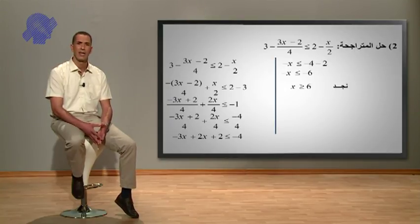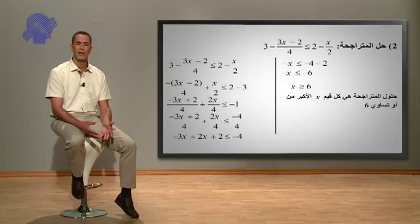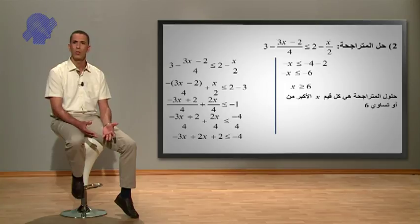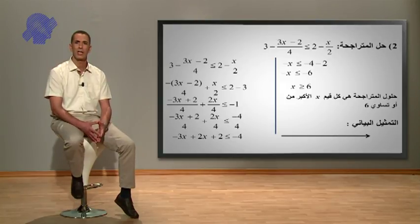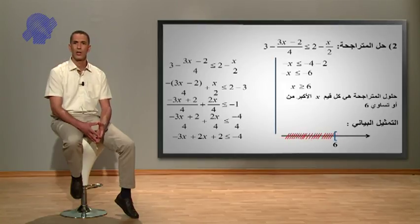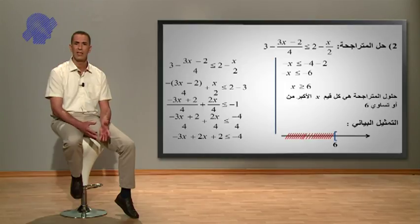لاحظوا أن معامل المجهول سالب، بقسمة طرفي المتراجحة على العدد ناقص 1 نتحصل على x أكبر أو يساوي من 6، لأن بقسمة طرفي المتراجحة على العدد السالب يتغير الترتيب. إذن حلول المتراجحة هي كل قيم x الأكبر من أو تساوي 6. وفي التمثيل البياني كل قيم الأكبر من أو تساوي 6 هي حلول لهذه المتراجحة، أما الجزء المشطب فهي غير حلول.